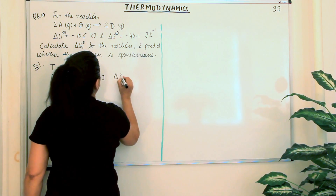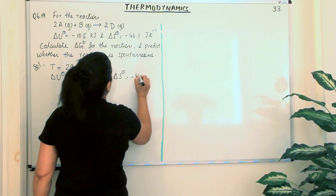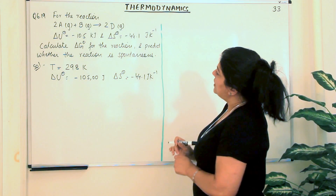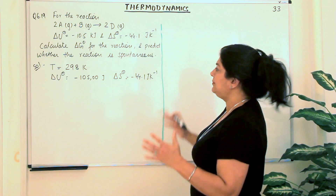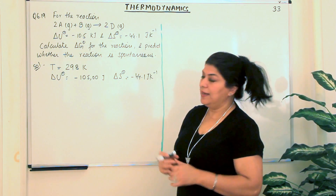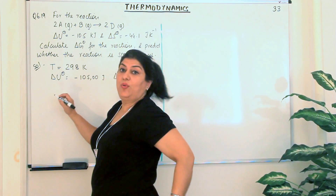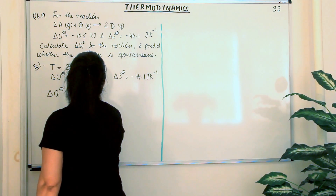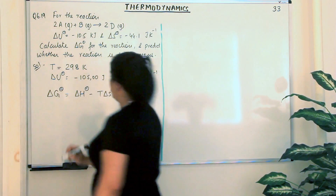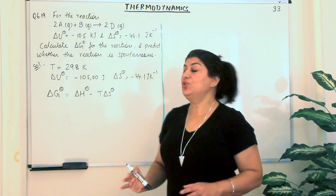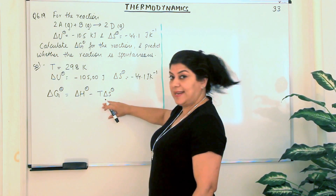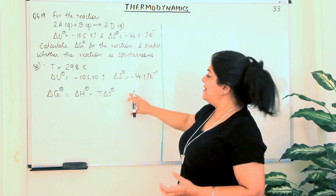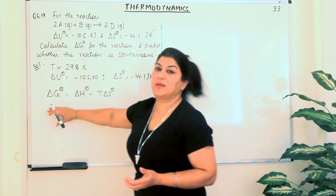Delta S⁰ is equal to minus 44.1 joules per Kelvin. Now, we have been asked for the free energy. The equation we will be using is delta G equals delta H⁰ minus T delta S⁰. The actual equation is delta H minus T delta S minus S delta T, but since most reactions take place at constant temperature, delta T becomes zero and that term is dropped.